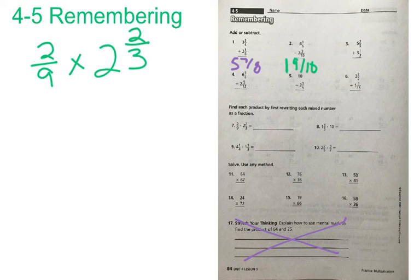We have number 7. We have 2 ninths and we're multiplying that by 2 and 2 thirds. We have a mixed number, 2 and 2 thirds, so we need to change that mixed number to an improper fraction. We have 3 times 2 equals 6, and then plus the numerator which is 2. 6 plus 2 equals 8. So it's going to be 8 over 3. Our denominator stays the same.